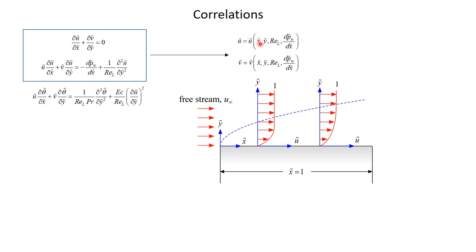So u will be a function of x, y, Reynolds number, and dp∞/dx, and so will v — these are dimensionless quantities. If you want to visualize that, you've solved for dimensionless velocity u-squiggle everywhere inside the flow. Here I'm showing u-squiggle as a function of y-squiggle at two different x-squiggle positions, going from zero to one. Remember, u-squiggle is u over u-infinity, so out in the free stream it equals one. The surface goes from zero at the leading edge to x-squiggle equal one at the trailing edge.